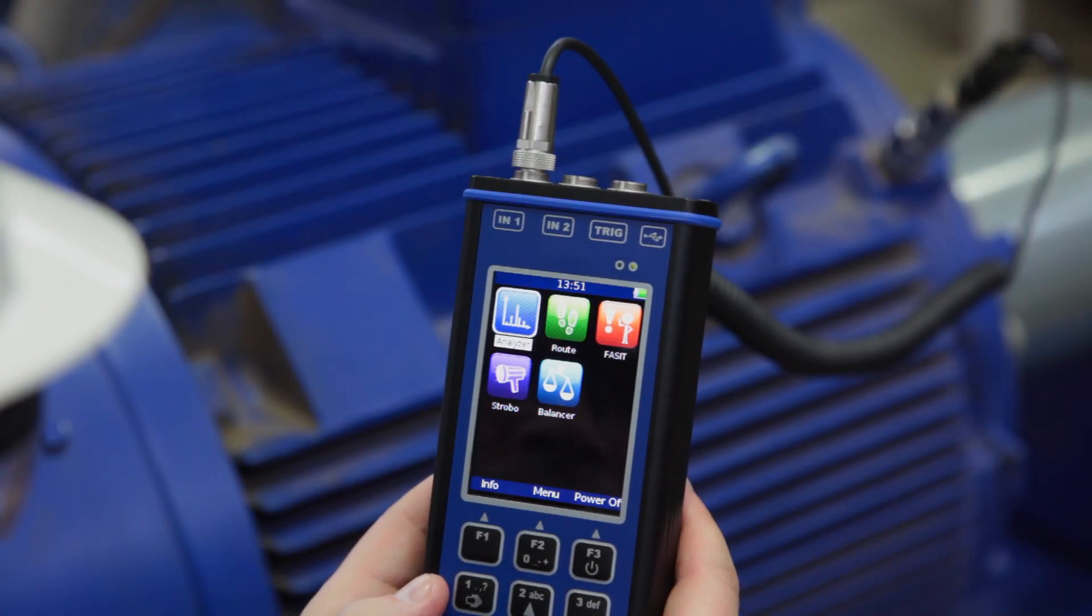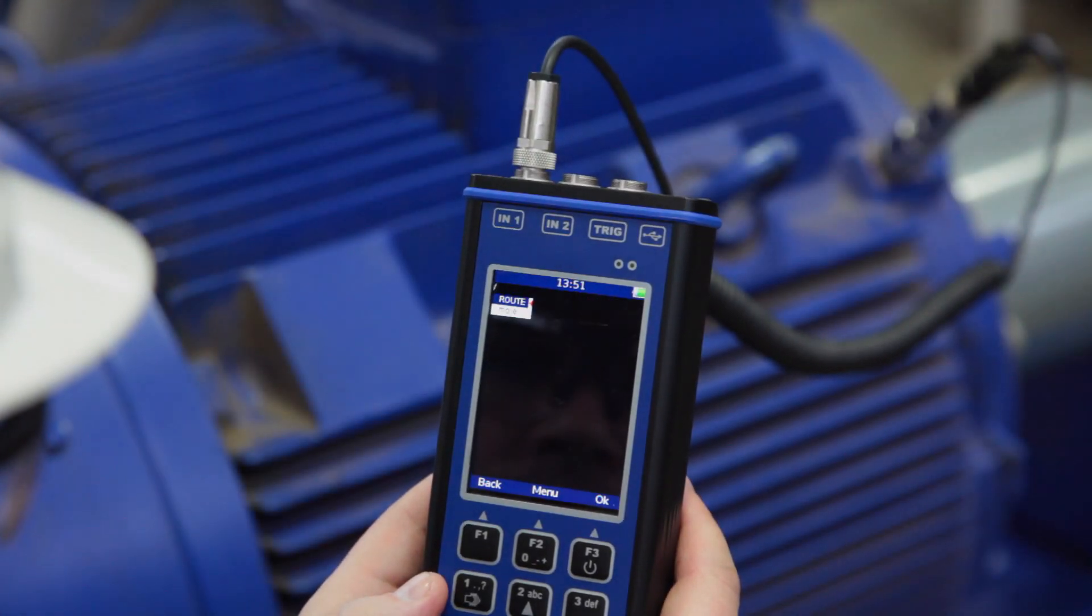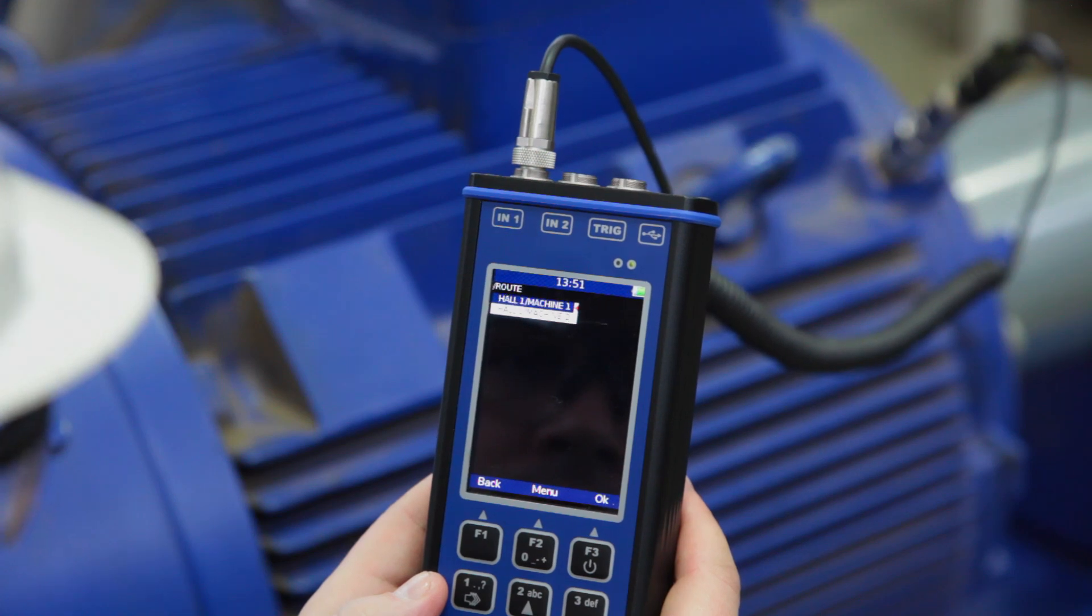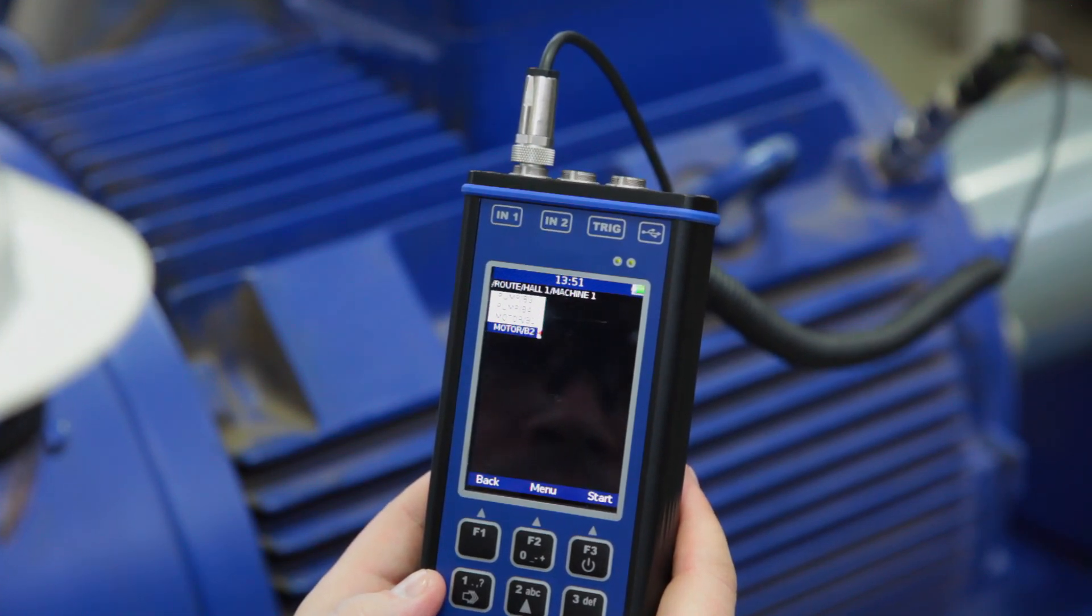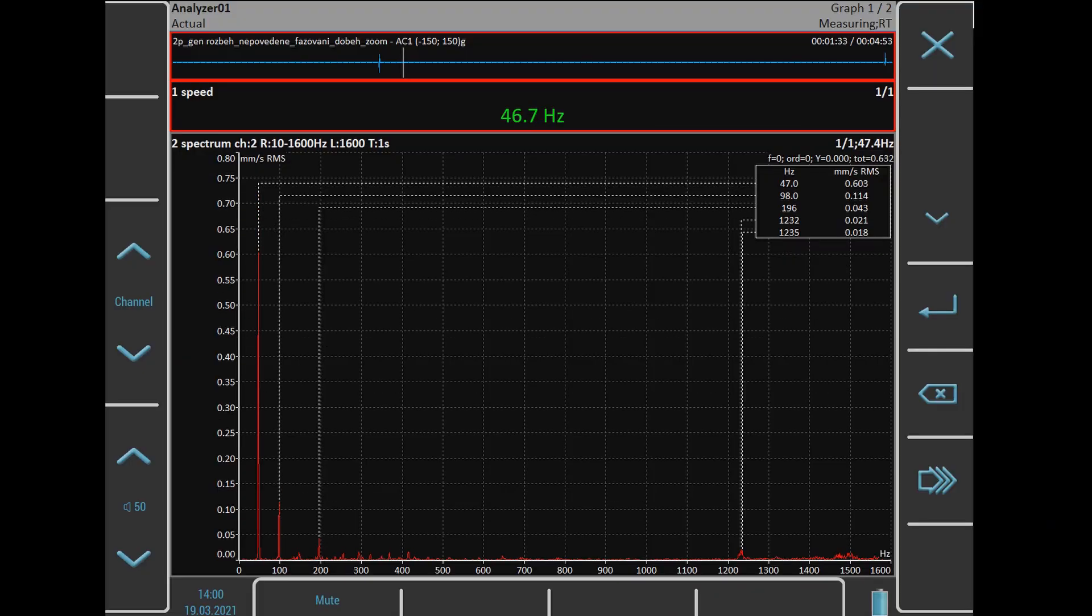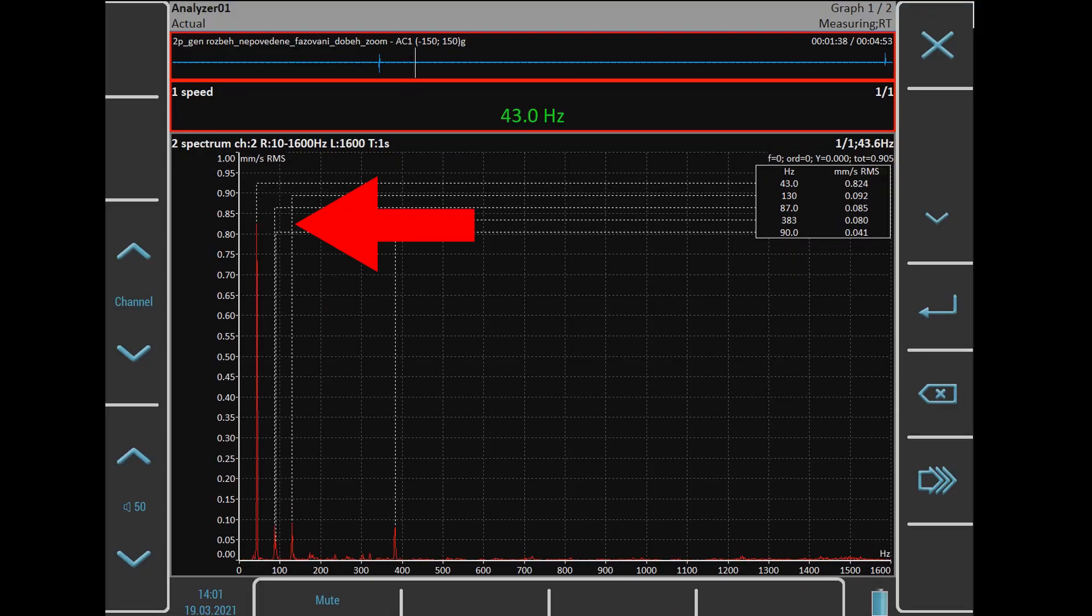Some electrical faults are recognizable in the vibration spectrum too. You should measure the motor with and without a power supply in order to find them. Some vibration signatures could disappear after power off, those with an electrical origin.